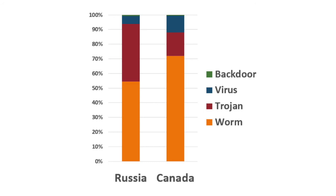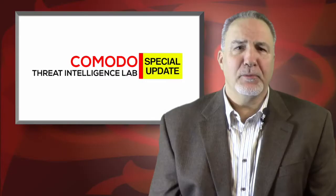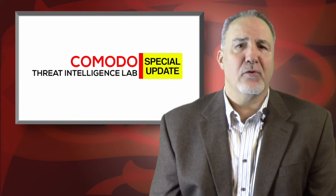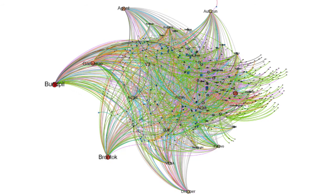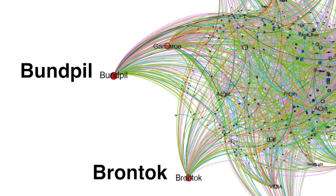As with other worm malware, it is a program that duplicates itself from one computer, directory, drive, or network to another. Here you can see a diagram of 2017 worm family detections, with Brontoc and Boondpill being the most prominent offenders.